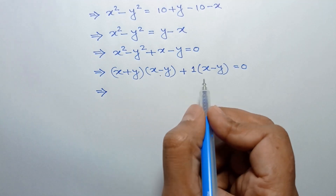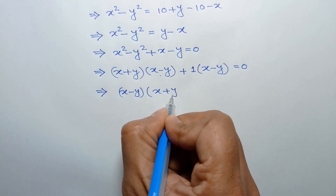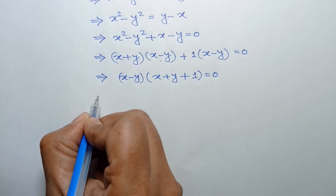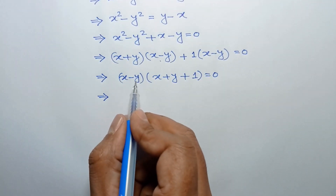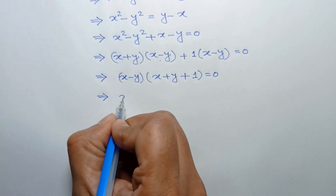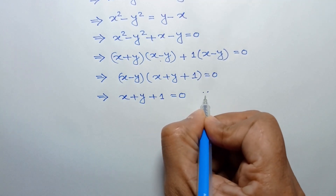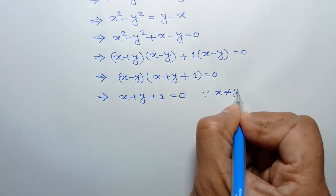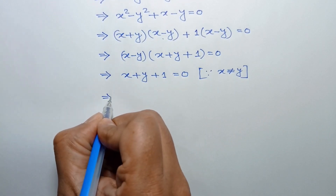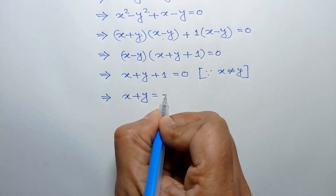Taking common x minus y, we can write x minus y times (x plus y plus 1) is equal to 0. Since x is not equal to y, x minus y is not equal to 0, so we can write x plus y plus 1 is equal to 0, which gives x plus y is equal to negative 1.